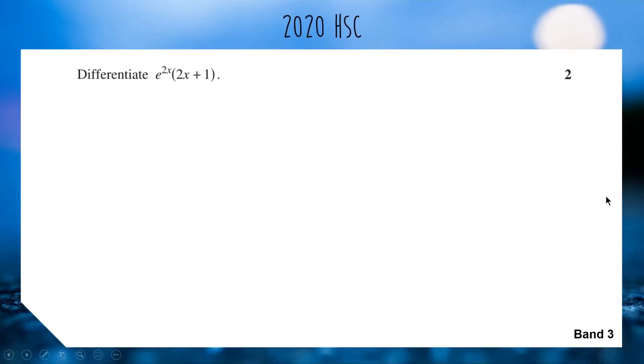Up next we've got a 2 mark question from the 2020 HSC, a band 3 question. It's differentiate e to the 2x multiplied by 2x plus 1. For this one we are differentiating a product of two functions, so we of course need to be using the product rule.